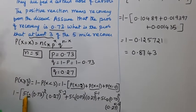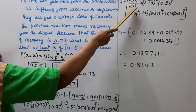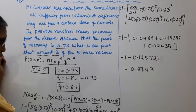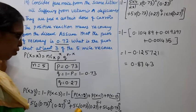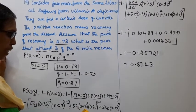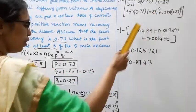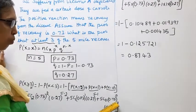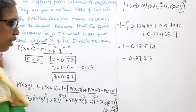5C2 = 5×4/(2×1) = 10. So 10 × (0.73)^2 × (0.27)^3. 5C1 = 5, so 5 × 0.73 × (0.27)^4. 5C0 = 1, so 1 × 1 × (0.27)^5.